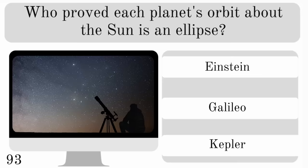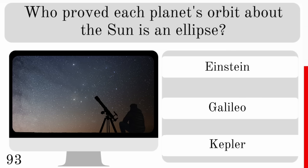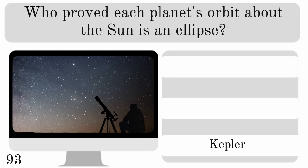Who proved that each planet's orbit about the sun is an ellipse? Einstein, Galileo or Kepler? And the answer is Kepler.